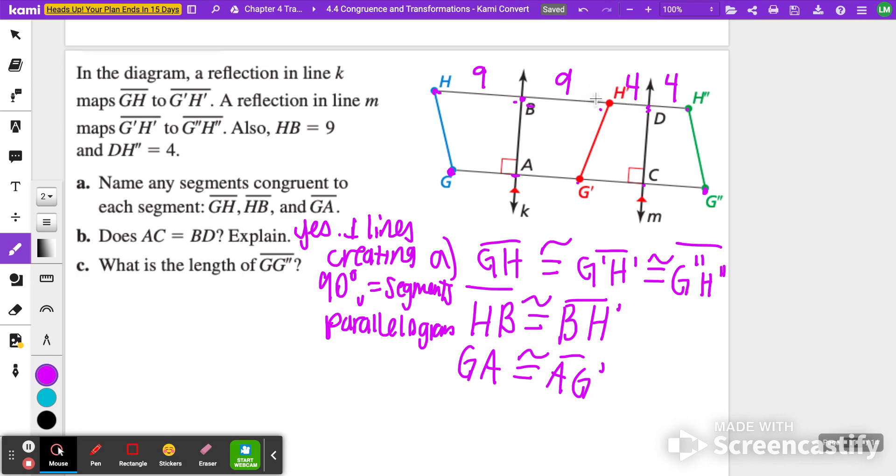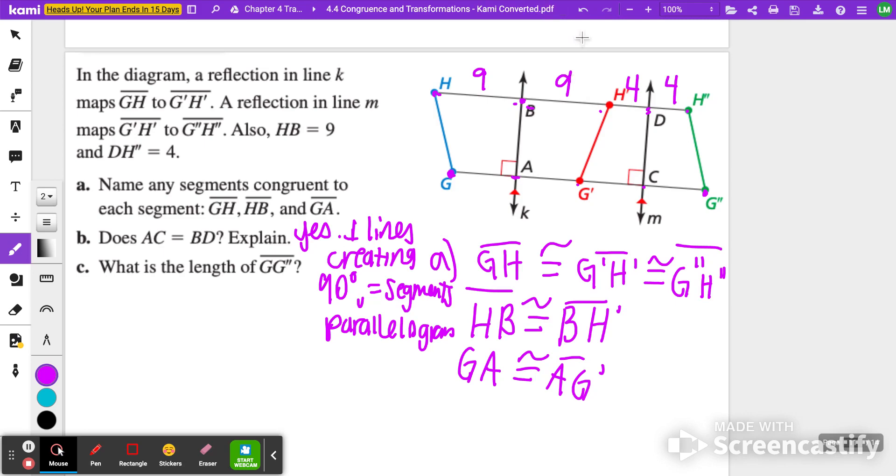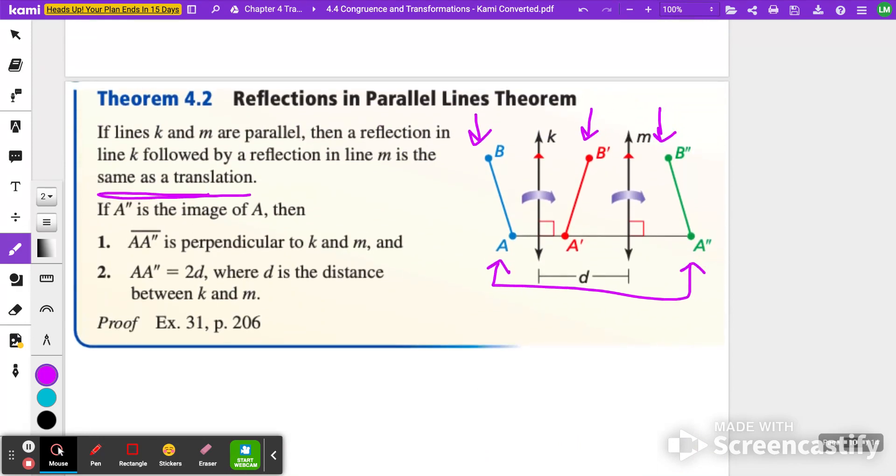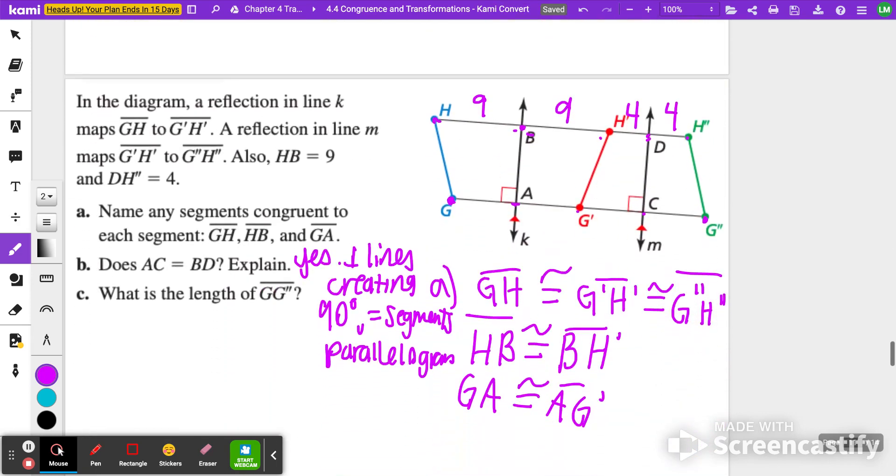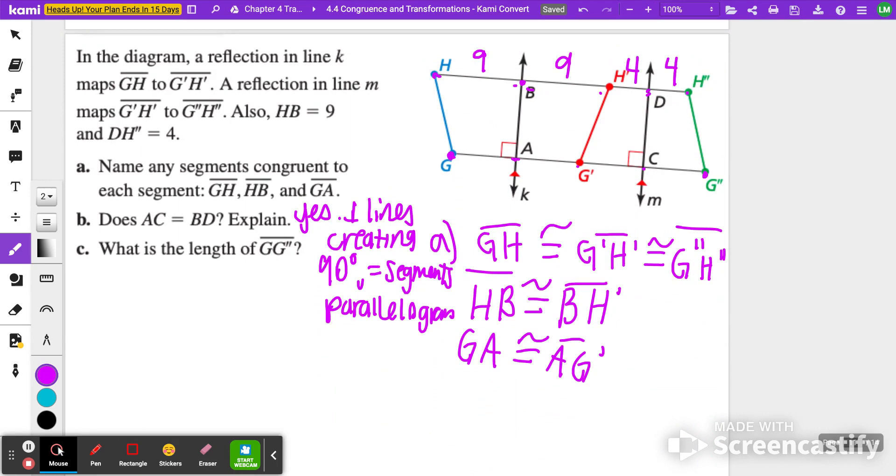Now, when you're looking at that, you're going to think about this theorem that we just talked about, which was right before. And I want you to just look at these two statements here. A to A double prime is perpendicular to K and M because they have those two right angles here. A to A double prime is equal to two times the distance where D is the distance between K and M. So between here and here, this is D. A to A prime is just two times D.